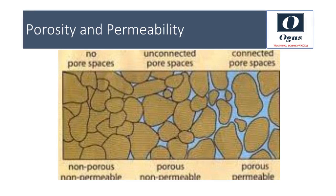Porosity is defined as the ratio of the volume of pores to the volume of bulk rock, and is usually expressed as a percentage. A rock has to be porous to be able to store oil and gas in its pores. Permeability is the capacity of a rock layer to transmit water or other fluids, such as oil. The standard unit for permeability is the Darcy, or more commonly the Milli-Darcy. As shown in this picture, porosity and permeability play an important role in oil and gas reservoirs.